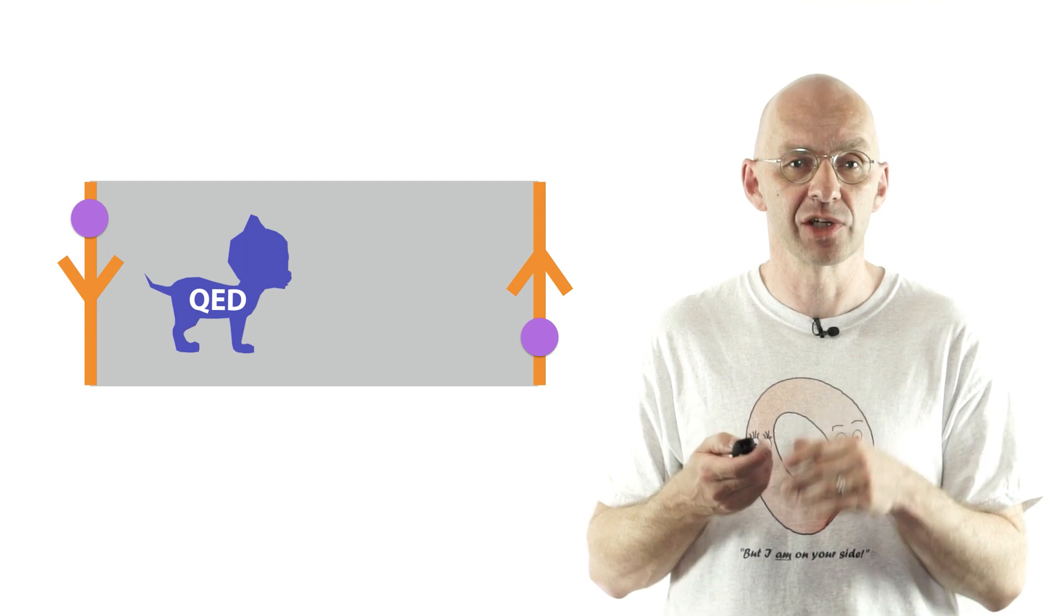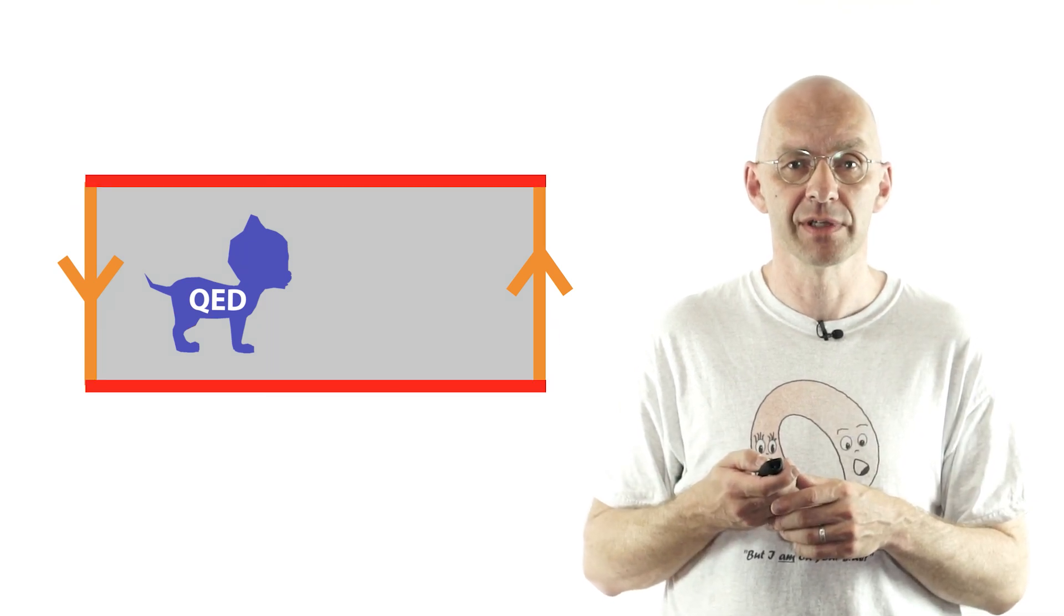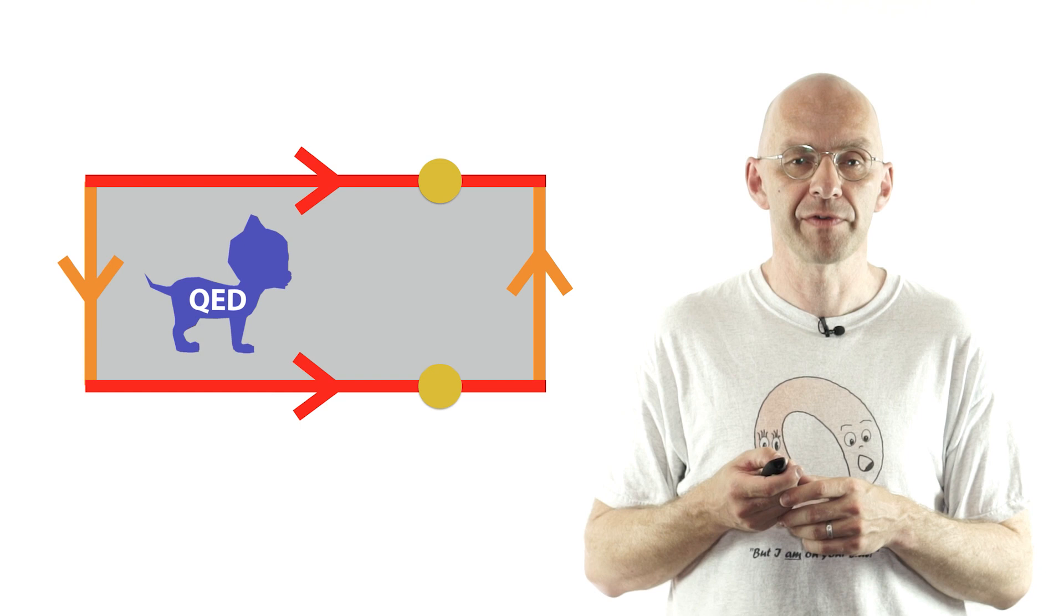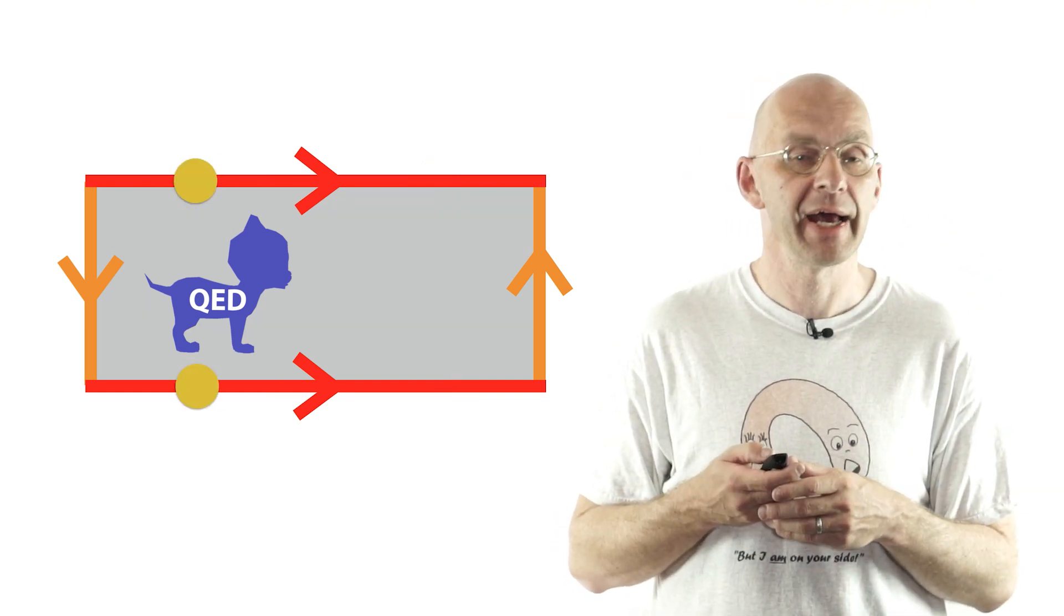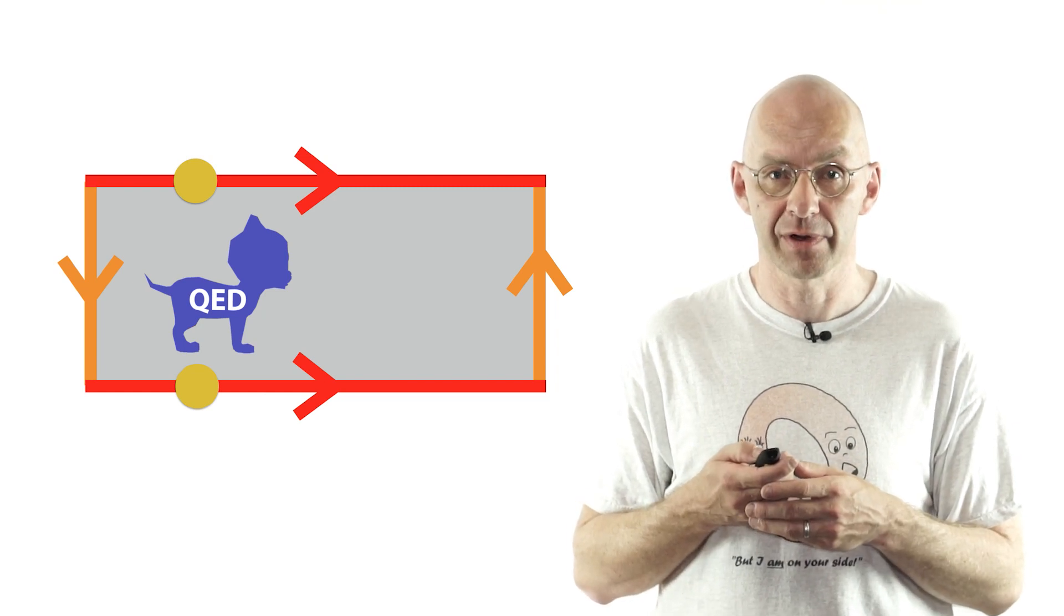And now a Klein bottle is actually just a Möbius strip whose edge has been glued to itself in a certain way. And that certain way I can actually show you very easily also with arrows. It goes like that. So what we have to do is we have to glue these two points together, we have to glue these two points together and so on and that will give you a Klein bottle.